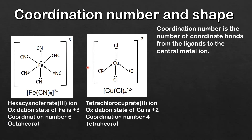Here's another example of a complex ion — this is the tetrachlorocuprate 2- ion. The oxidation state of the copper is +2, the coordination number is 4 because there are four coordinate bonds to the central metal ion, and the shape is tetrahedral.